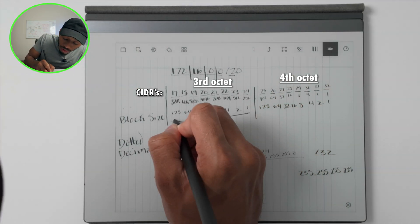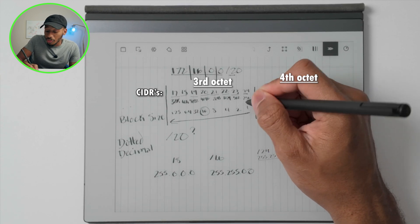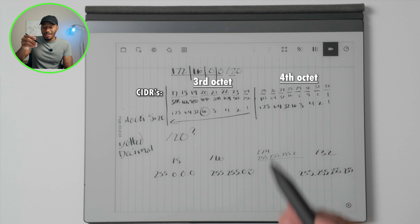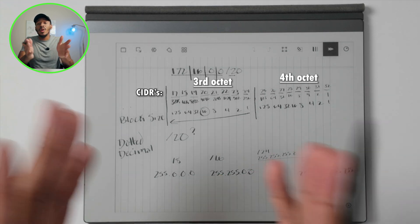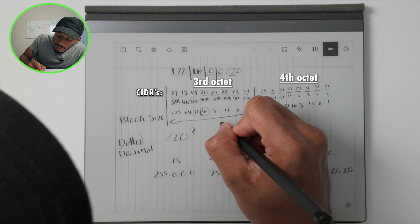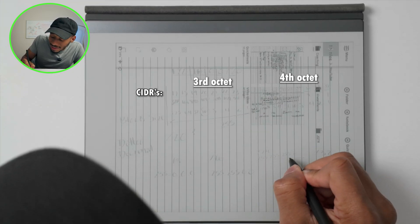If we're working with the /24, it starts at one, so you do 1 + 2 + 4 + 8 + 16 + 32 + 64 + 128. If you add up all of those numbers, that'll give you the value of 255. So that's why in this case this third octet value is 255.